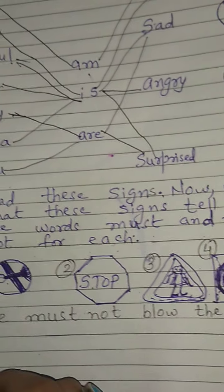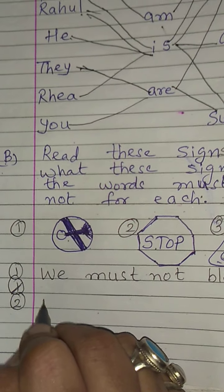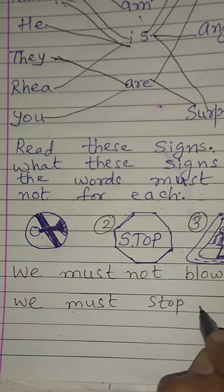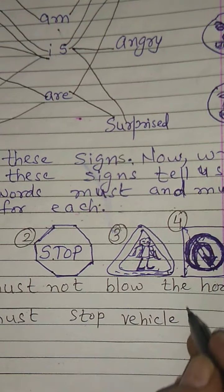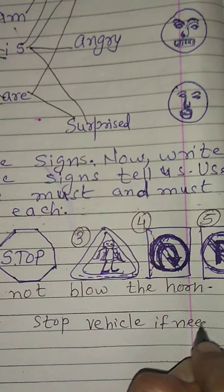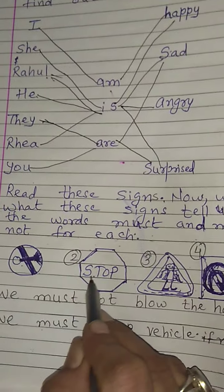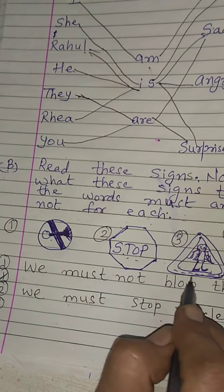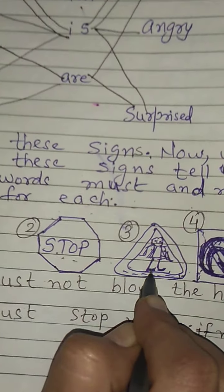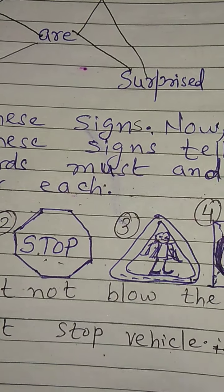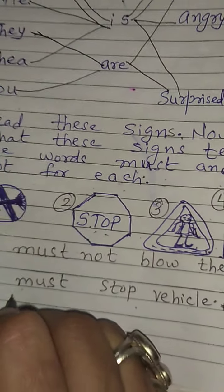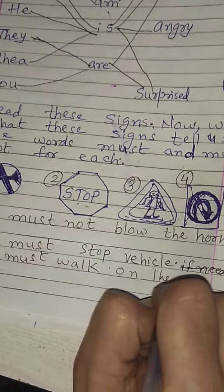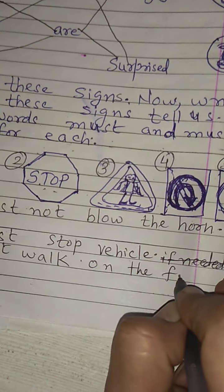The second picture is a stop sign — we must stop the vehicle if needed. The third sign tells us: we must walk on the footpath. Footpath पे ही चलना चाहिए।